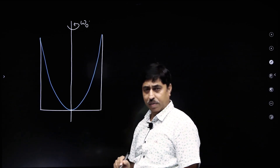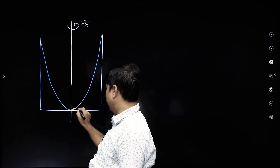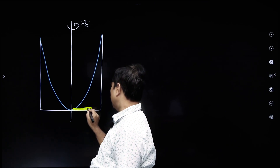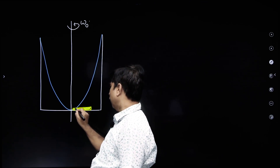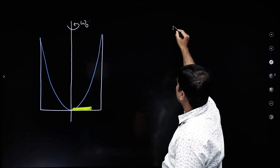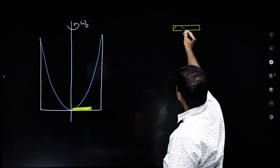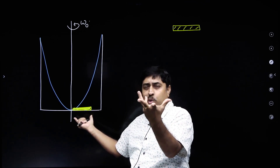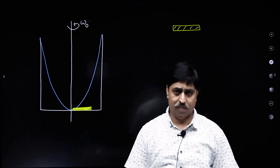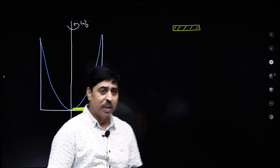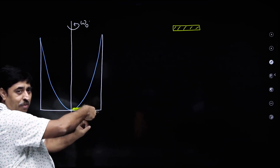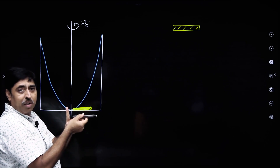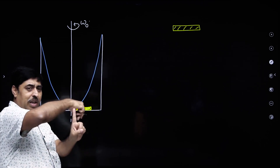Let us imagine a cylindrical element of liquid here at the bottom of the container. Please do not get confused — I am drawing it here separately; it is just an element of the liquid only. Liquid is present here, and I am imagining the motion of one cylindrical element of the liquid. It is rotating as the container rotates — this yellow colored cylindrical piece of liquid is going around like this.